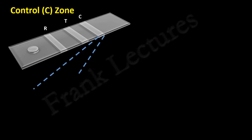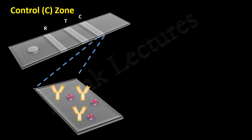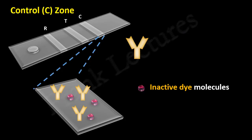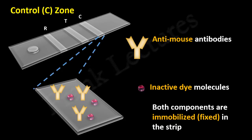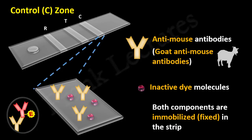Zooming into the control zone, it is also made up of two components: antibodies and inactive dye molecules. Both are immobilized in the strip. The inactive dye molecules are the same as those in the test zone. However, the antibodies present in the control zone are known as anti-mouse antibodies. Recall that the reaction zone antibodies are produced in mouse and are called mouse antibodies. The anti-mouse antibodies in the control zone recognize and bind those mouse antibodies. These anti-mouse antibodies are produced in goat, and are therefore also known as goat-anti-mouse antibodies.